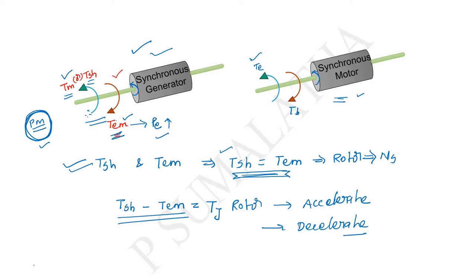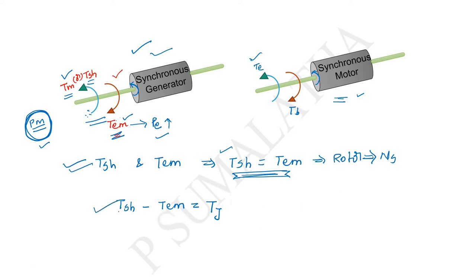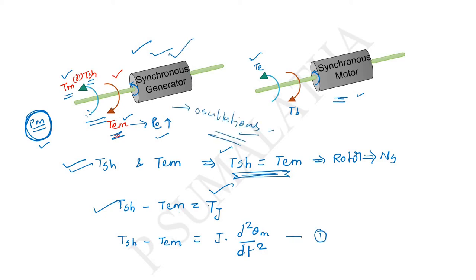Due to acceleration or deceleration, one more torque arises: the inertia torque Tj. We can write the relation: shaft torque minus electromagnetic torque equals inertia torque Tj, which is represented as J × d²θ/dt². Since torque terms are with respect to the mechanical quantities, the angle is also mechanical: Tsh − Te = J × d²θm/dt². This is equation number one.